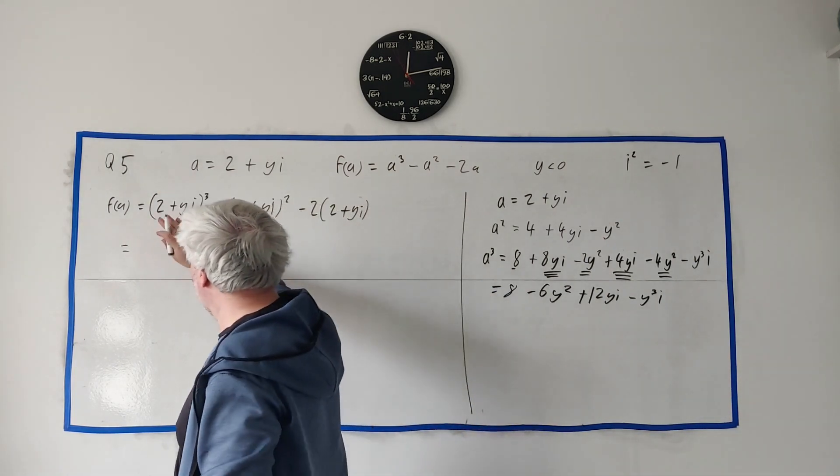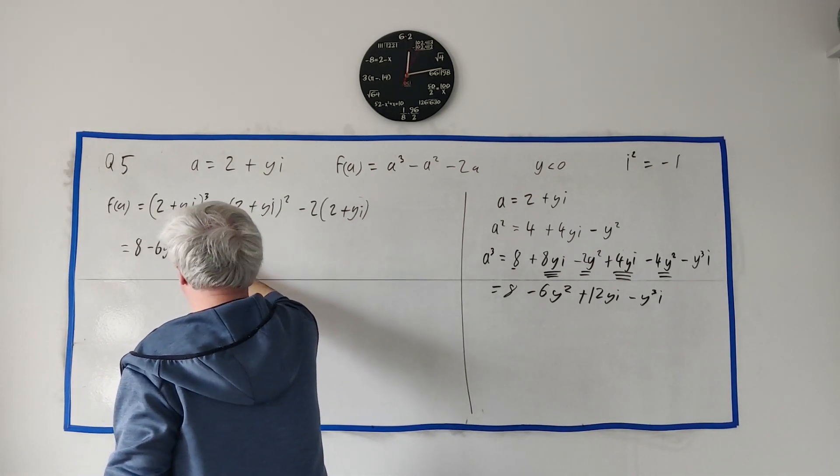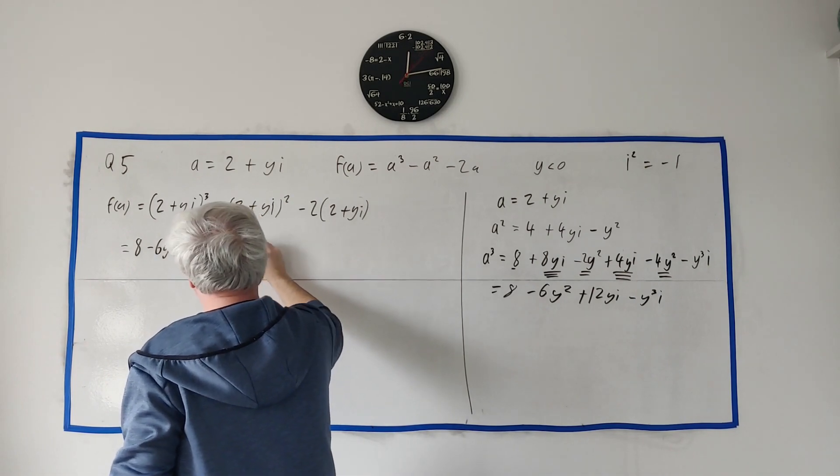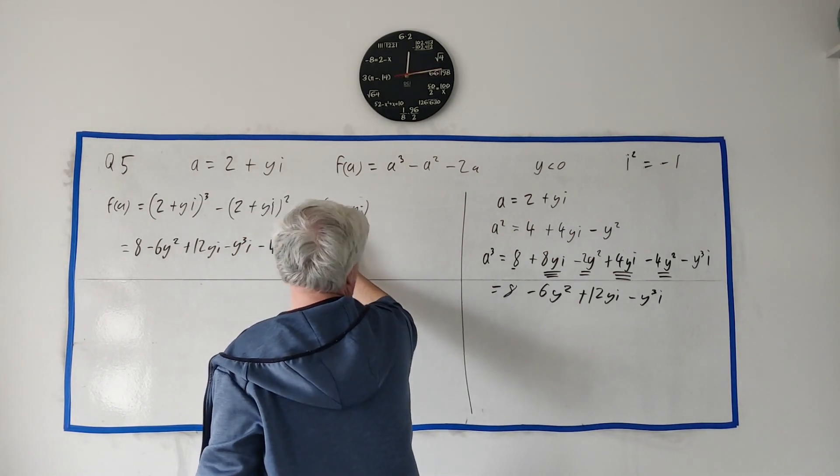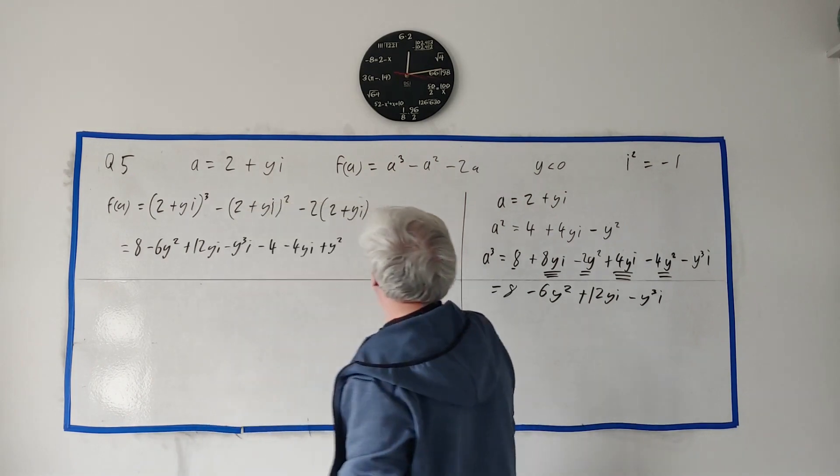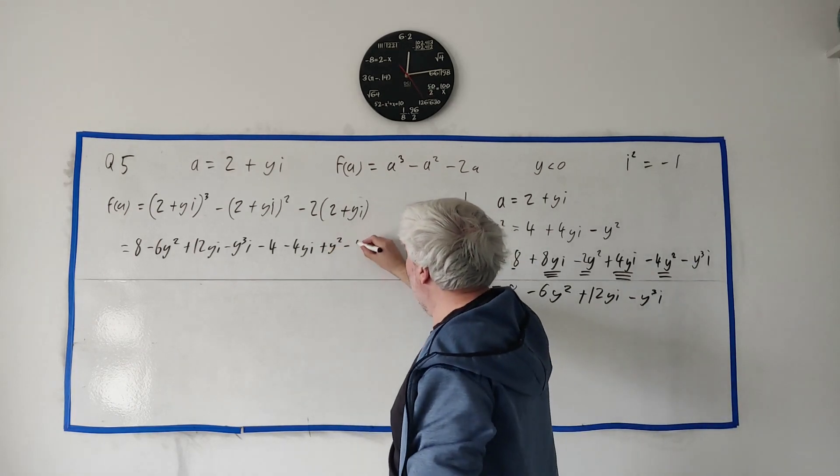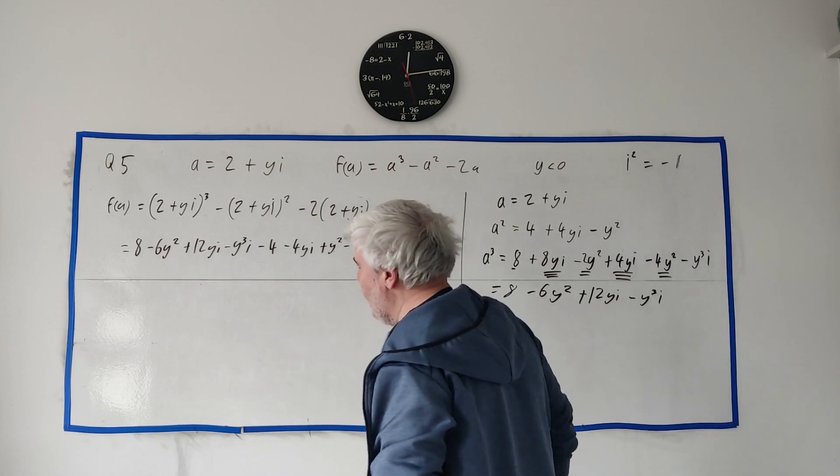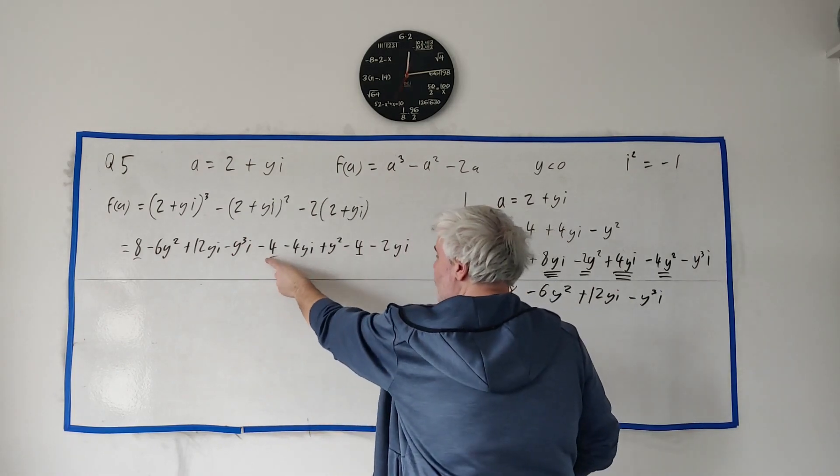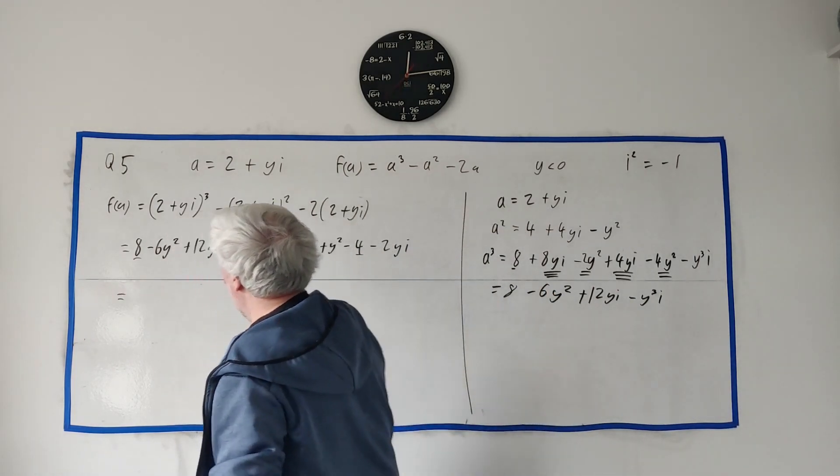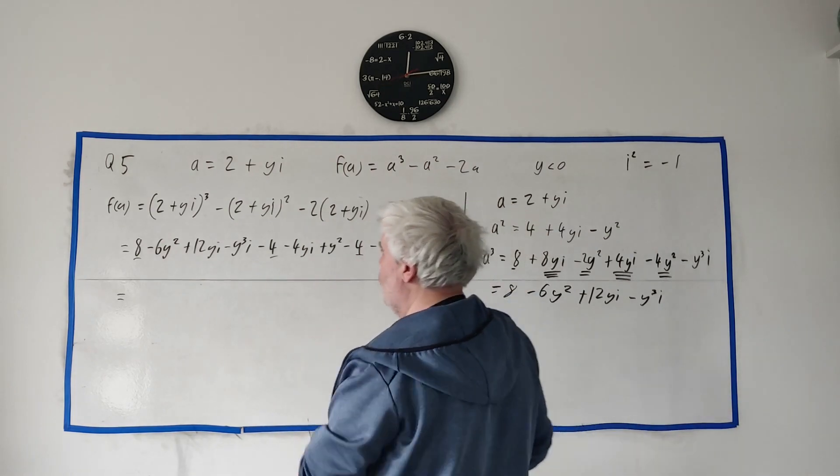And right, let's try and fill all of this in. The a cubed is this. I'll just jot all of this down basically. 8 minus 6y squared plus 12yi minus y cubed i. And minus a squared. I just have to change all the signs. Minus 4 minus 4yi plus y squared. Let me just double check that was a minus. Yeah, okay. And then minus 2 times this. We can do this one right here. Minus 4 minus 2yi.